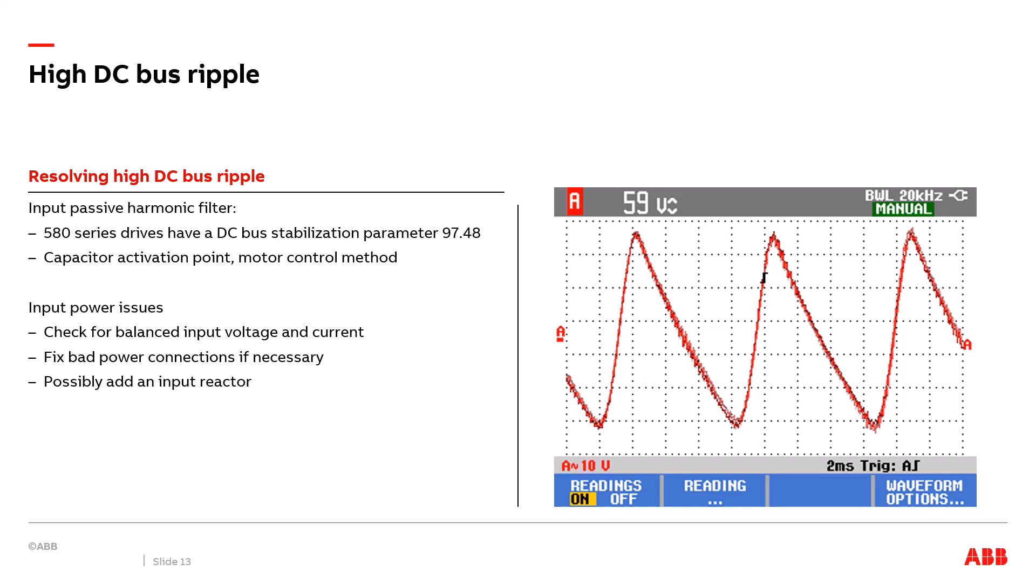Now if your DC bus oscillation is caused by input power issues check for balanced input voltage and current. Make sure everything's balanced there. If you have bad connections make sure you adjust those connections. Maybe you have a loose connection that could be causing a high DC bus ripple. If all the connections look good and you maybe just have pure unbalanced input voltage causing imbalanced input current to the drive possibly adding an input line reactor in front of the VFD will help resolve the high peak to peak voltage DC bus ripple.